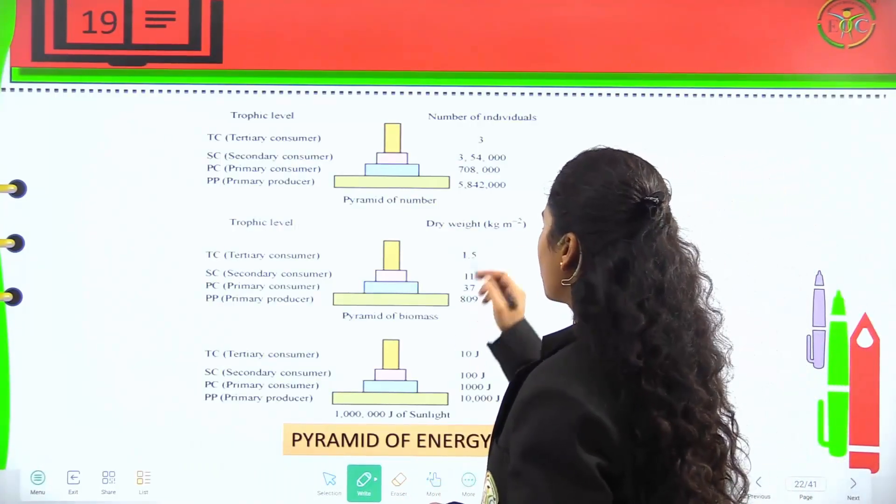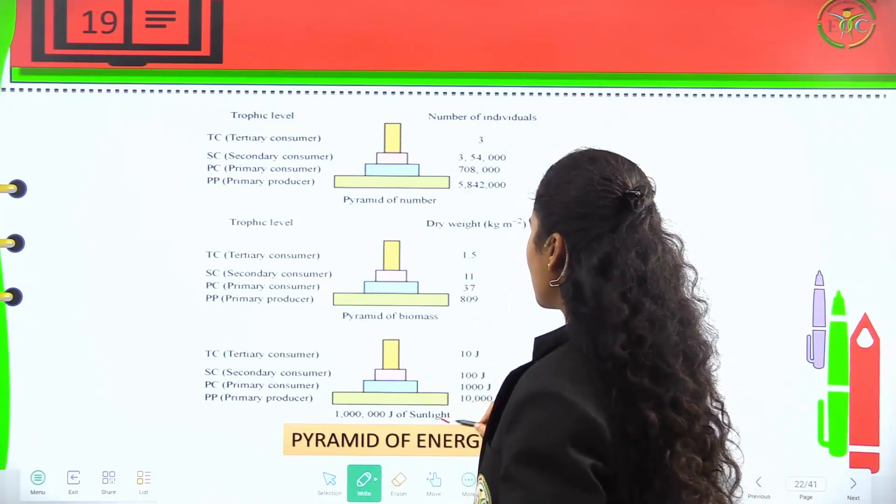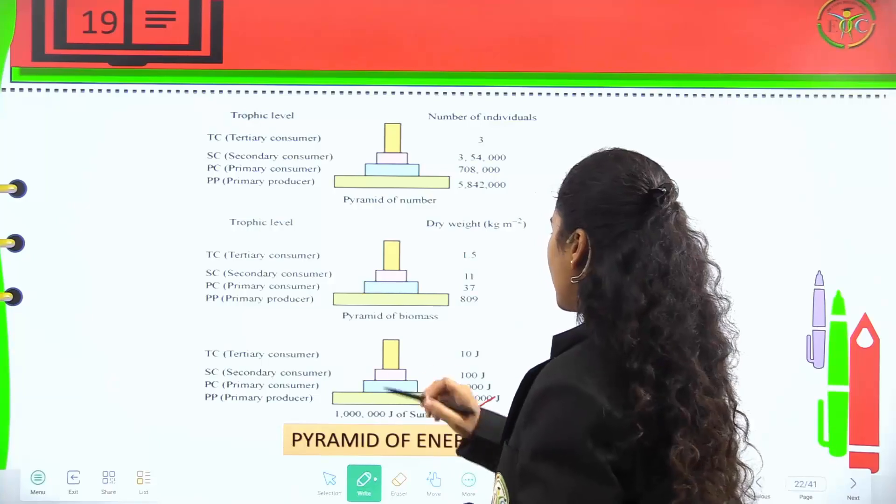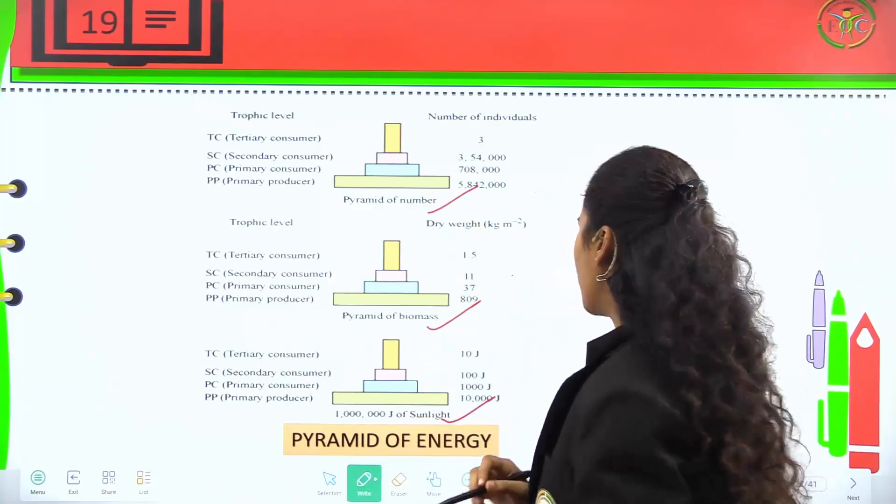This is the pyramids of energy with one lakh joules of sunlight, and pyramid of biomass and pyramid of number.